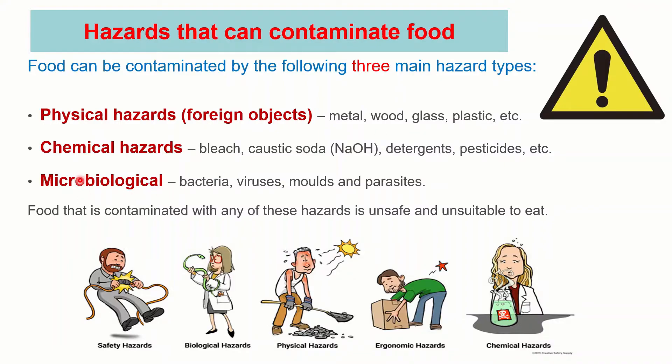The second type is chemical hazards. Chemical hazards can come from utensils such as knives, cutting boards, etc. Other chemicals that can cause chemical hazards include caustic soda, soaps, detergents, and pesticides. These are all chemical hazards, and if they come into contact with food, these are chemical hazards.